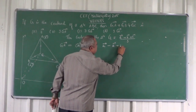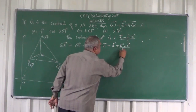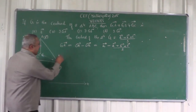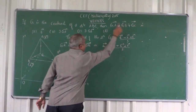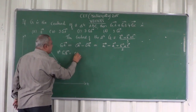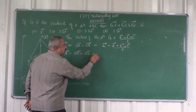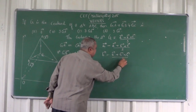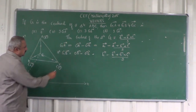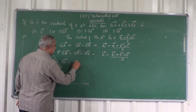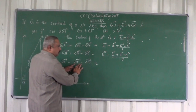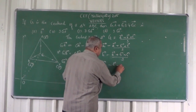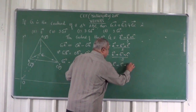So vector GA equals vector A minus (vector A plus vector B plus vector C) divided by 3. Similarly, vector GB equals vector OB minus vector OG, which is vector B minus (vector A plus vector B plus vector C) divided by 3. And vector GC equals vector OC minus vector OG, which is vector C minus (vector A plus vector B plus vector C) divided by 3.